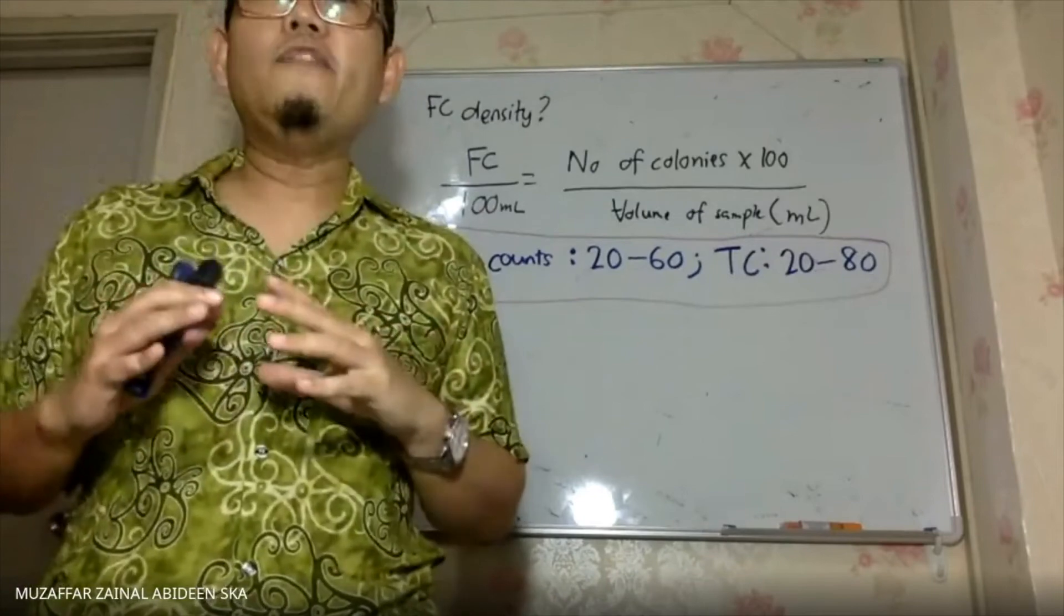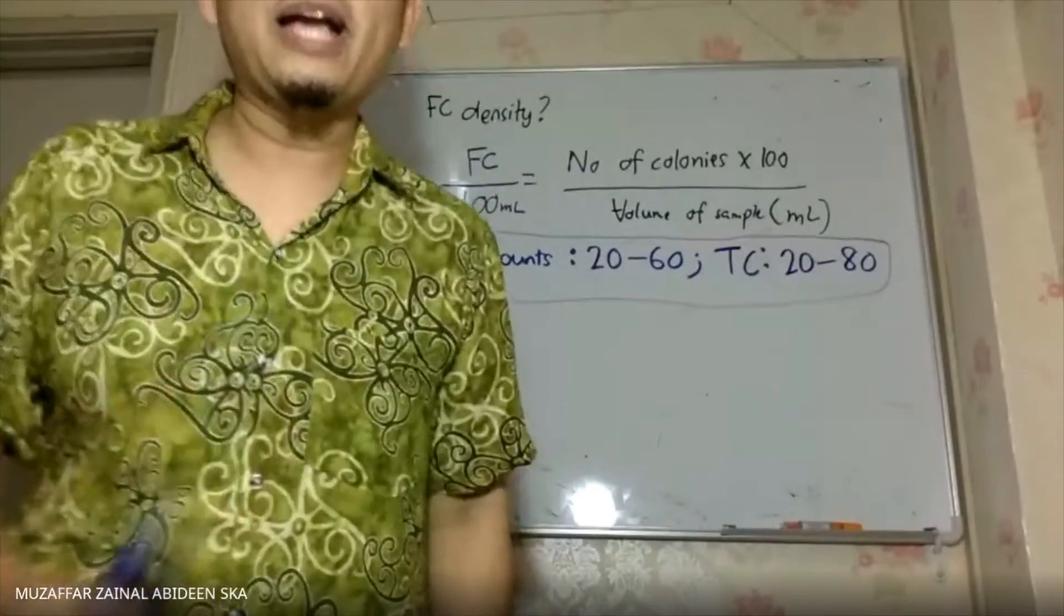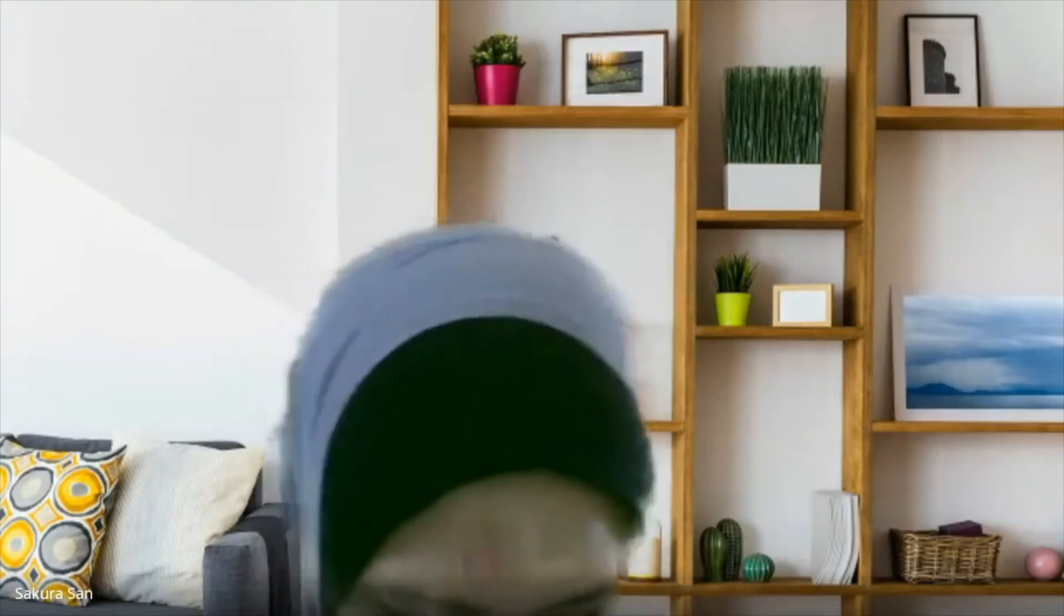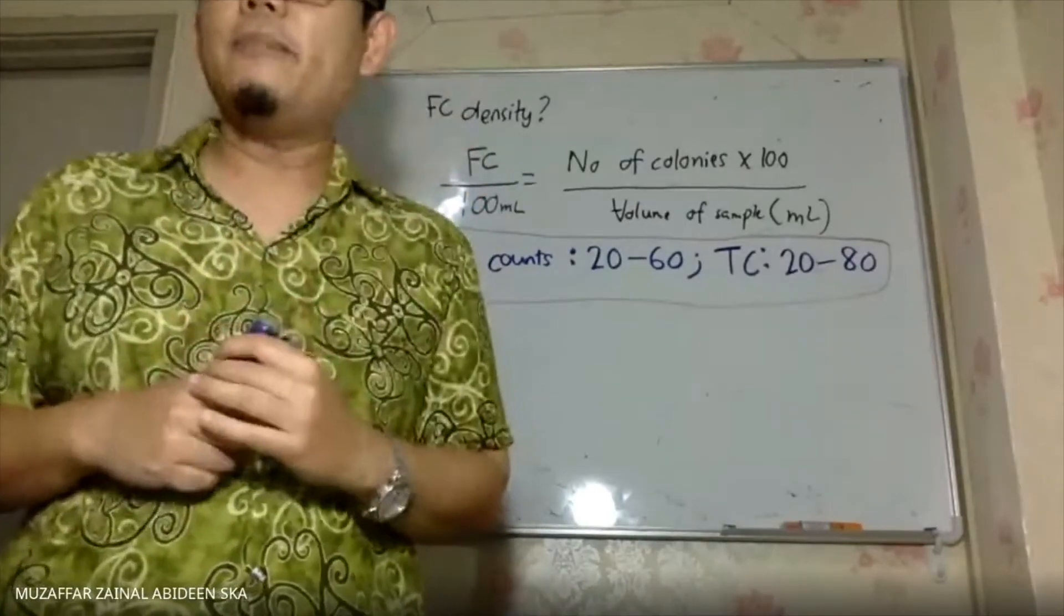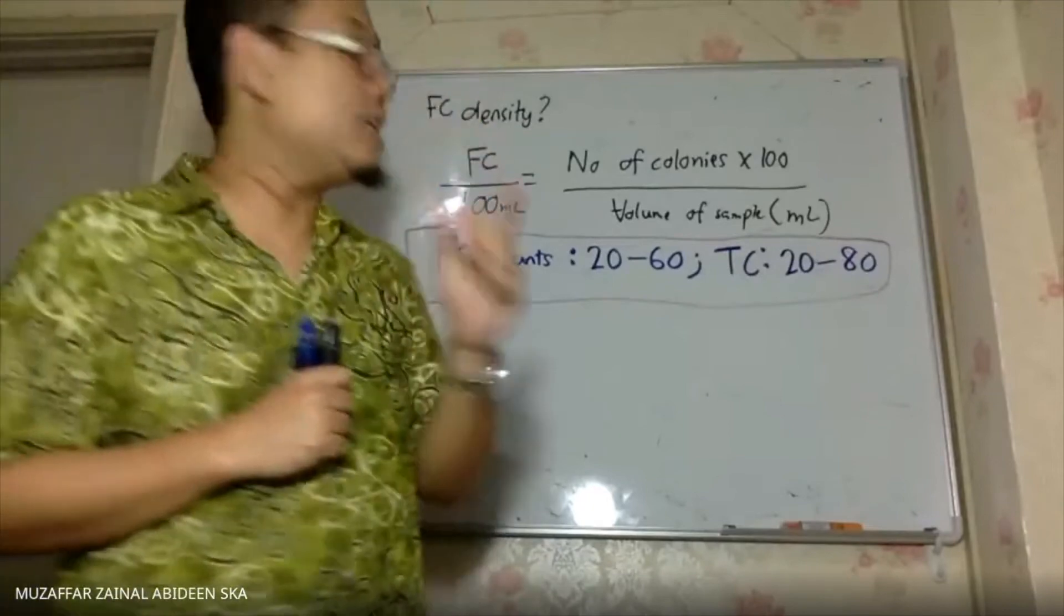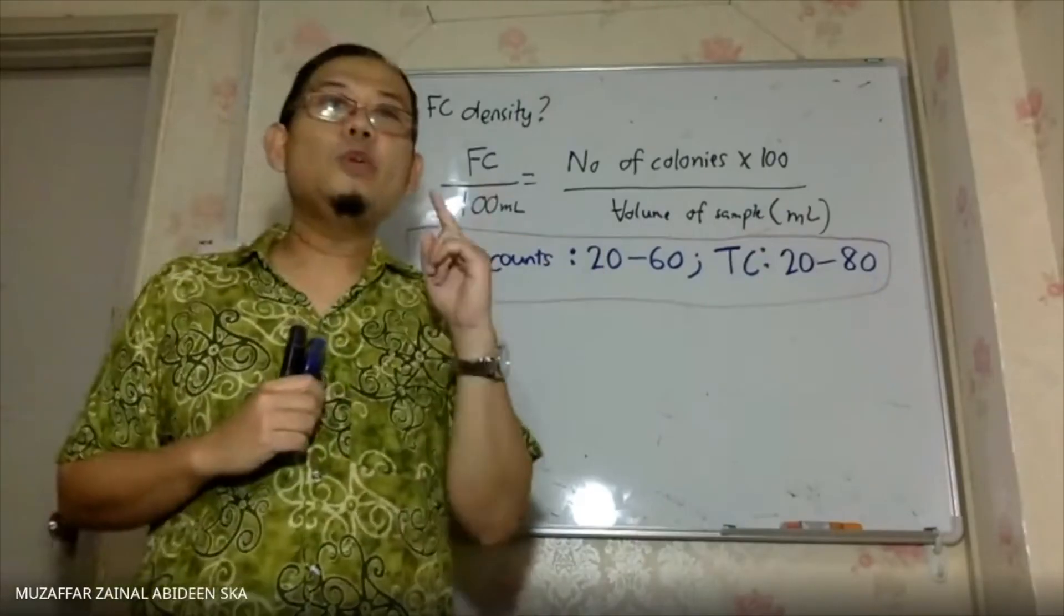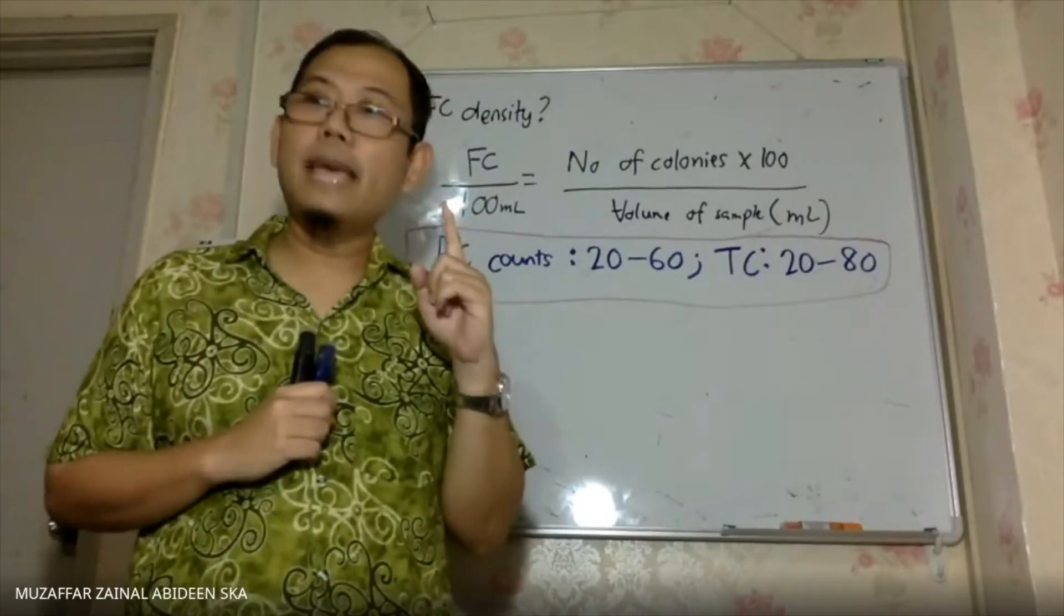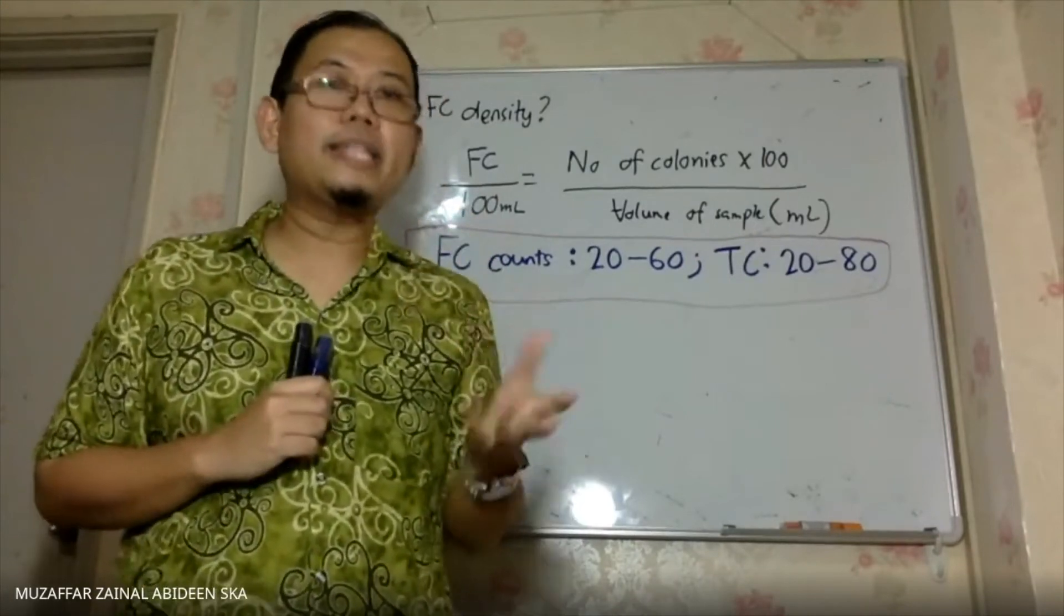11 cannot, it must give you 20 to 60. So the second last and last also cannot be used. They give invalid results. You cannot accept that because the number of count is 11, it's less than 20.